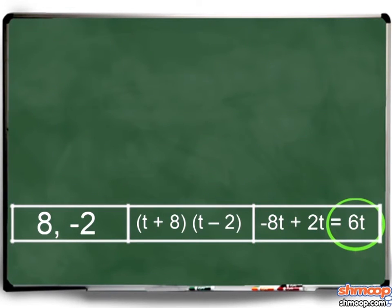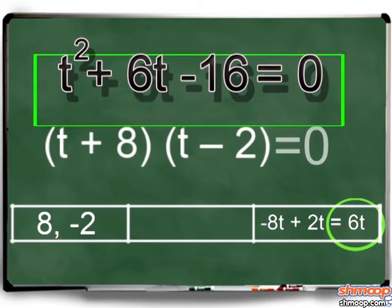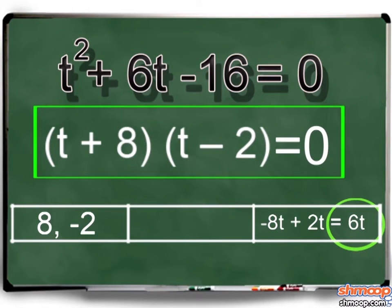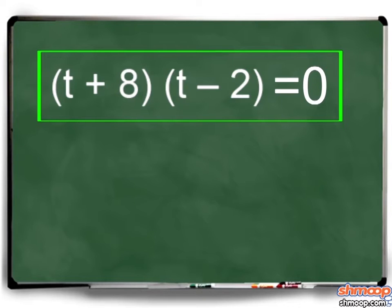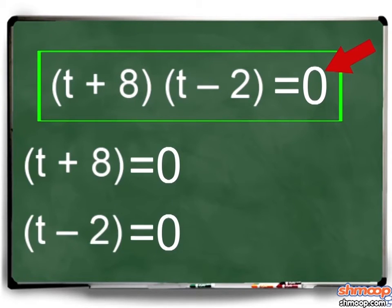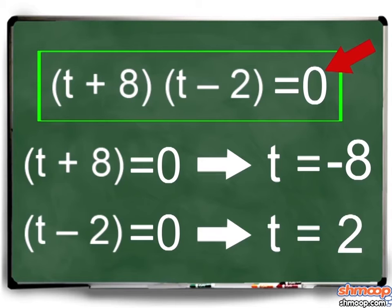That means t squared plus 6t minus 16 can be factored to (t + 8) times (t - 2). But what about that zero, our secret weapon? For the equation to equal zero, either t plus 8 or t minus 2 must equal zero. That means t equals minus 8 or t equals 2.